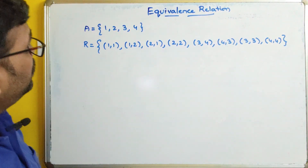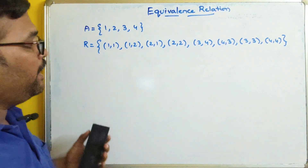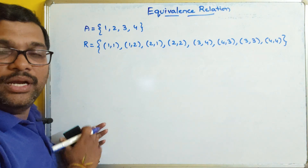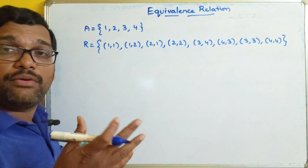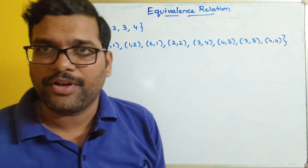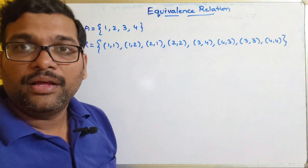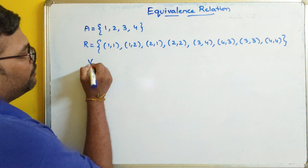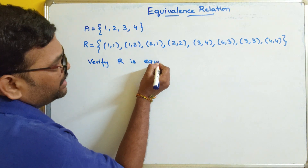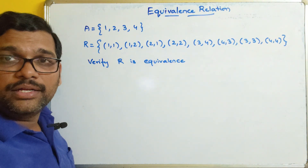Now let us see this example. There is a set with four elements: 1, 2, 3, 4. And there is one relation R which is a subset of the Cartesian product — always we said that the relation is a subset of the Cartesian product — here between A and A. So this is the relation R, which gives some pairs of elements. Now we have to check and verify whether R is an equivalence relation.